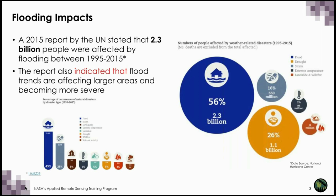Flooding impacts. According to the Munich Reinsurance Group, one of the world's leading insurance companies, floods were by far the most frequent cause of natural disasters between 1995 and 2015. Worldwide, about a third of all reported events and a third of economic losses resulting from natural catastrophes are attributable to floods. The United Nations reports that flooding has accounted for nearly half of all weather-related disasters worldwide since 1995, has killed an estimated 157,000 people, and affected some 2.3 billion others. The report also indicated that flood trends are affecting larger areas and are becoming more severe.